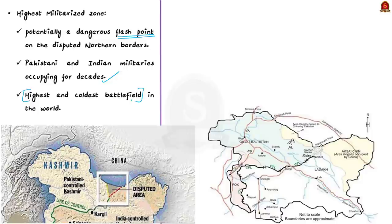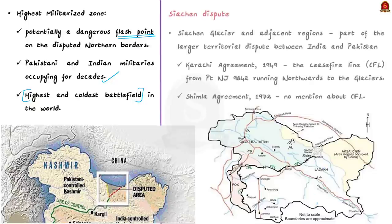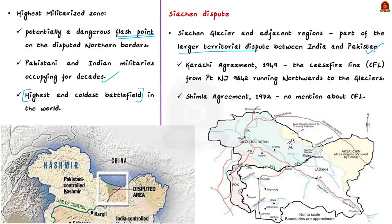Because of this, soldiers have to endure the inhospitable terrain, and they have to even fly in poor weather conditions in close proximity of the hills. So why is this glacier militarized? The glacier and adjacent regions are part of the larger territorial dispute between India and Pakistan, and this dispute has its origin in the 1949 Karachi Agreement.